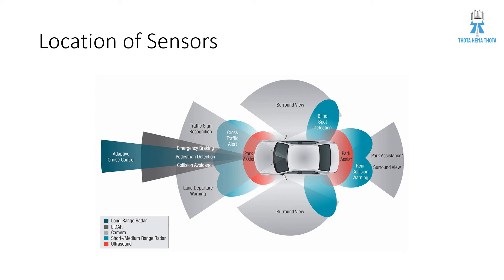Traffic sign recognition and lane departure warning are both marked in ash color, which is the camera. Cross traffic alert and blind spot detection are marked in green color — short or medium range radar.